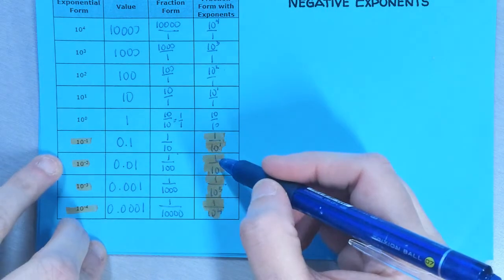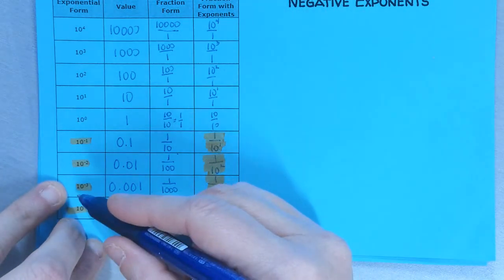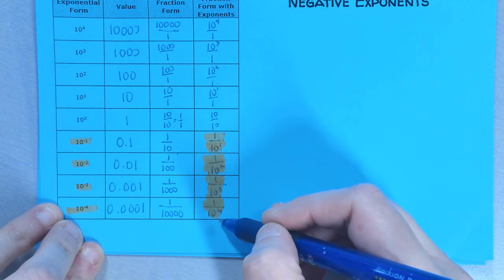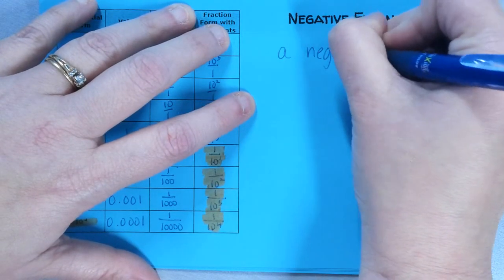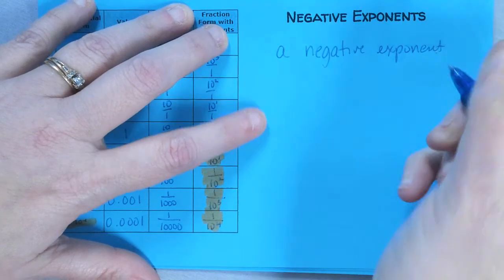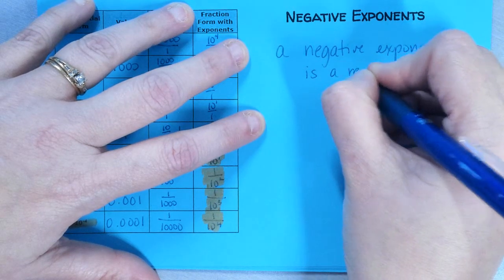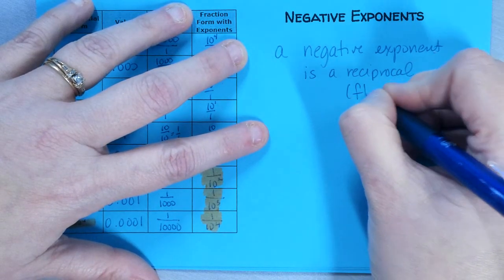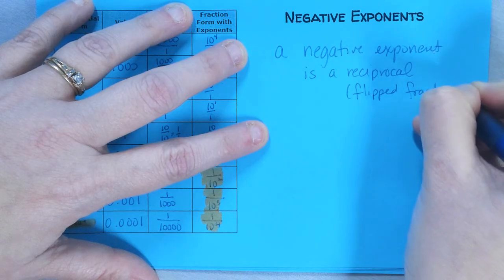10 to the negative 2 is 1 over 10 squared. 10 to the negative 3 is 1 over 10 to the third. 10 to the negative 4 is 1 over 10 to the fourth. So a negative exponent is a reciprocal, which is, just for your information to remind you, it's a flipped fraction.